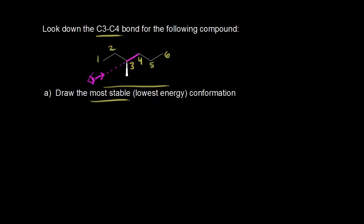It's very important to be able to draw these Newman projections without the use of a model. Let's start by thinking about what is attached to carbon three. There's a methyl group coming out at us in space, which means there must also be a hydrogen going away from us in space. And what is attached to carbon four? There must be a hydrogen coming out at us in space and a hydrogen going away from us in space.